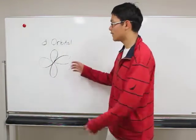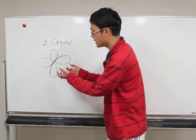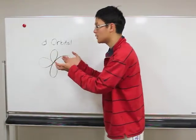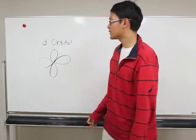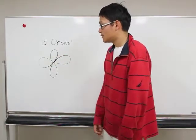And in the D orbital, there are five orbitals. So you can imagine the three dimensionally structured D orbitals. It's very complex. So D orbitals can hold up to ten electrons, which is two electrons in each D orbital.